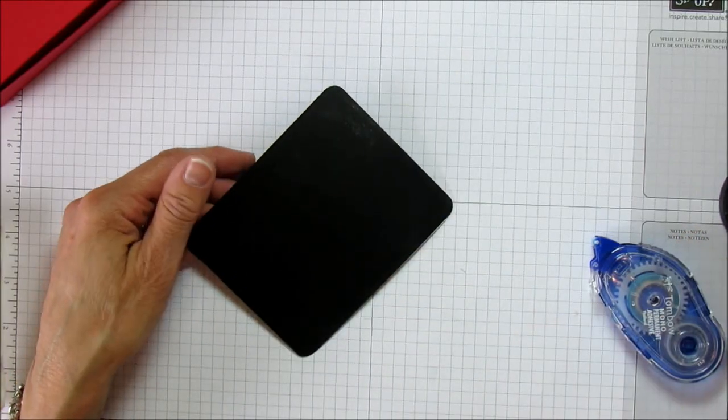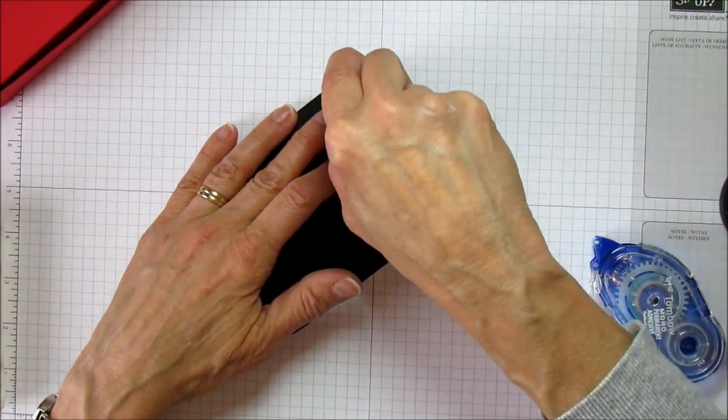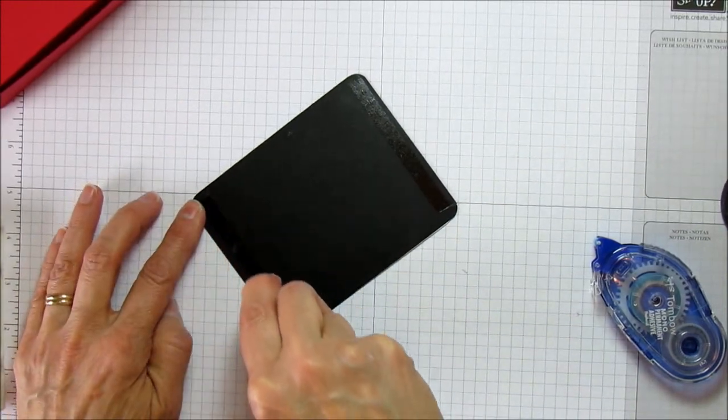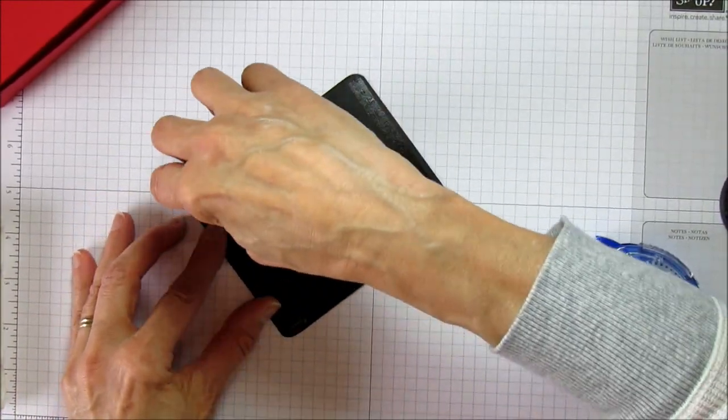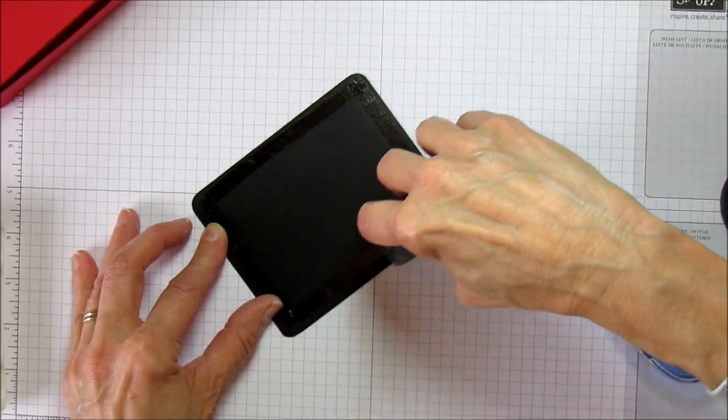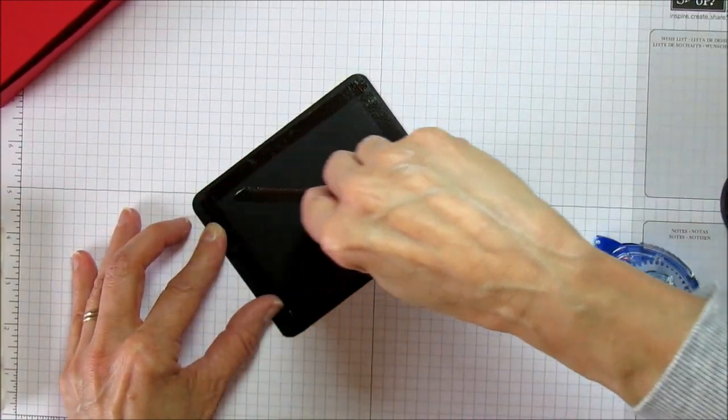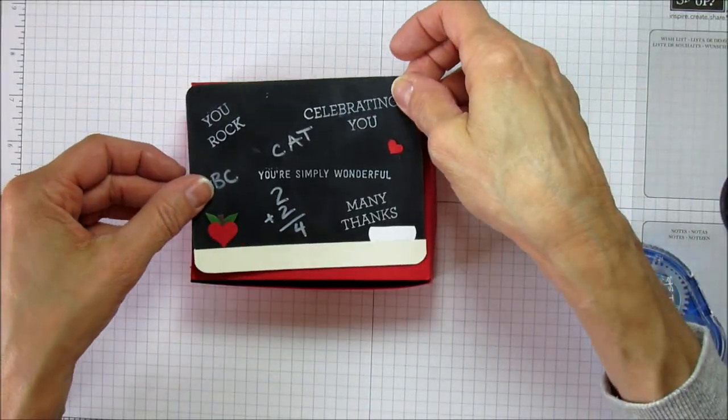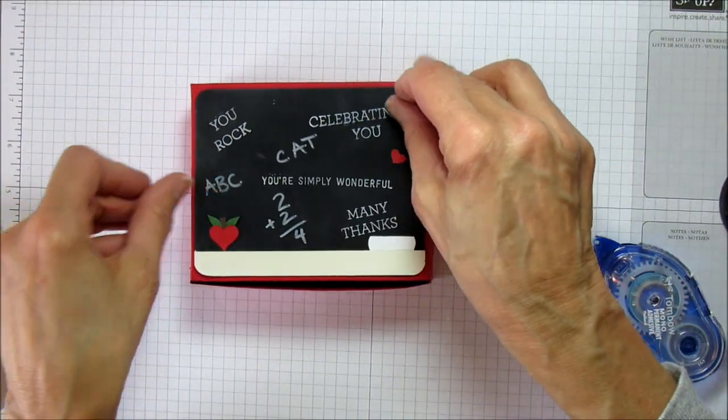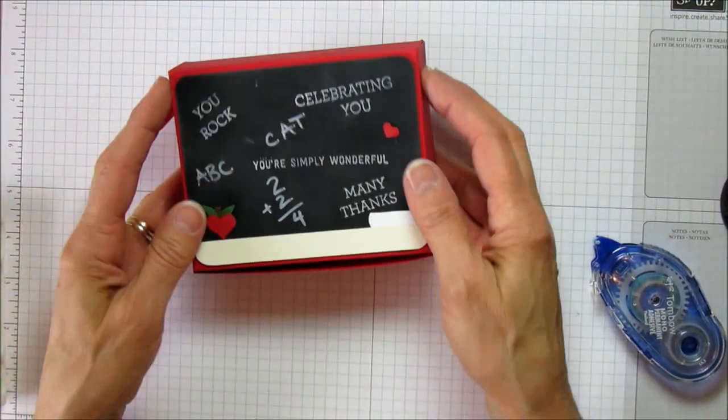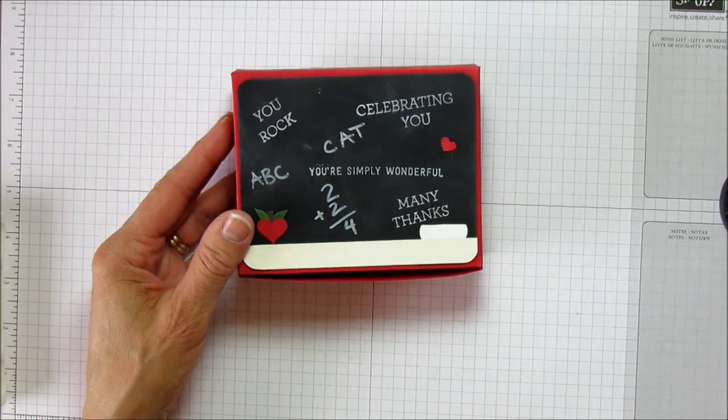Again, I'm going to use the fast fuse because I want to make sure this stays on. You can use the fast fuse for this or your sticky strip, but the fast fuse is pretty strong adhesive. Then we'll just attach that to the top.